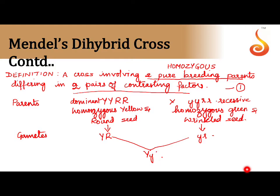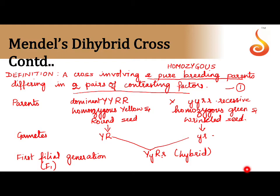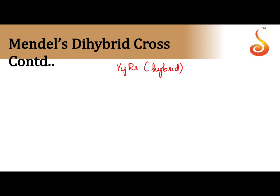We cross the gametes, and we get capital Y, small y, capital R, small r — a hybrid. In which generation? This is the first filial generation, or the first progeny, also called the first offspring, short-formed as F1 generation. Till here we achieve another one mark.